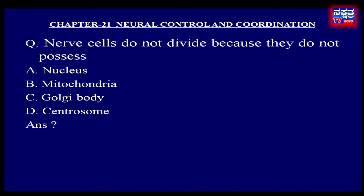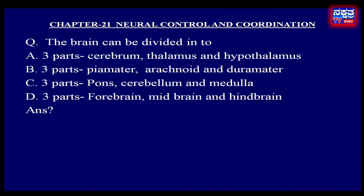The brain can be divided into: A. Three parts — cerebrum, thalamus and hypothalamus. B. Three parts — piameter, arachnoid and durameter. C. Three parts — pons, cerebellum and medulla. D. Three parts — forebrain, midbrain and hindbrain.